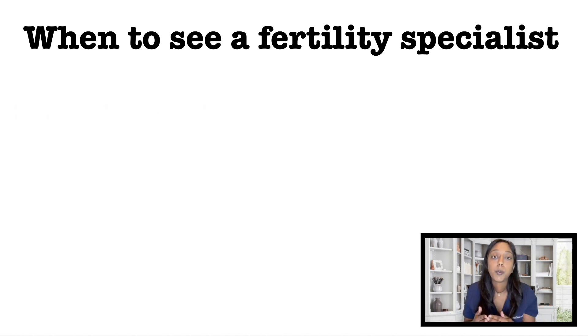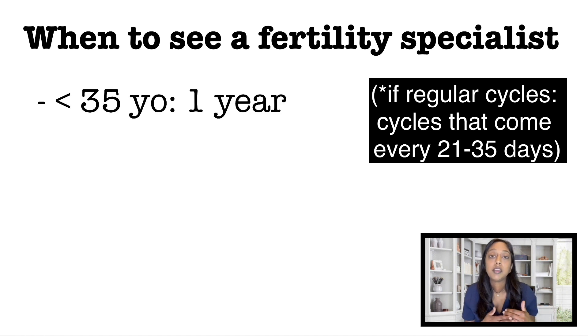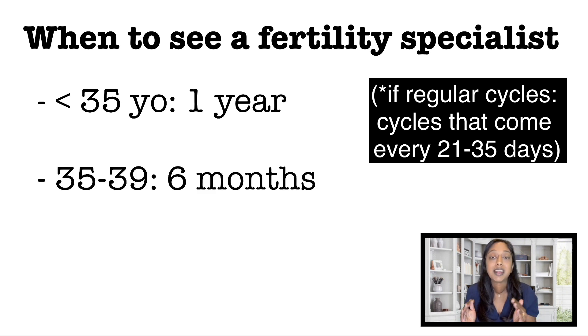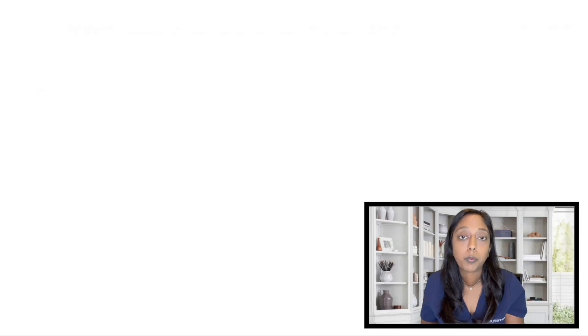Other circumstances: if cycles are regular and you are under the age of 35 and have been unsuccessful for one year, it's recommended to see us. If you're between the ages of 35 and 39 and have been unsuccessful for six months, it's also recommended to see us. If you're over the age of 40, it's recommended to see us right away. With advancing female age, there's a decline in ovarian reserve, egg number, and egg quality, and with the passage of time that decline continues — so we want to do everything we can to maximize your chances of success.